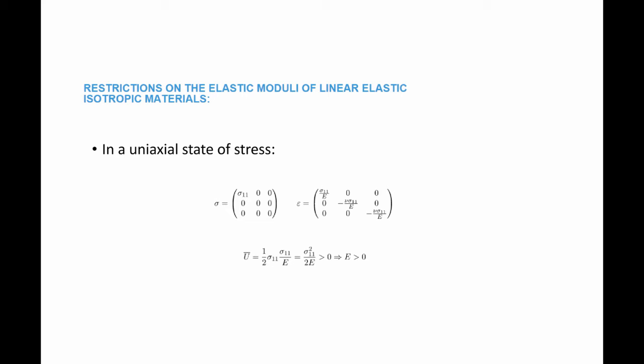For this energy to be positive, sigma squared over 2E has to be greater than zero, which implies that Young's modulus has to be greater than zero. Intuitively, this means every time I apply a stress, the strain is in the same direction: if it's a tensile stress, it has to produce tensile strain; if it's a compressive stress, it has to produce compressive strain.